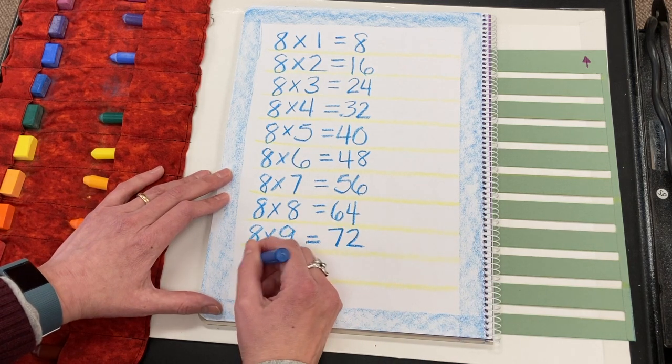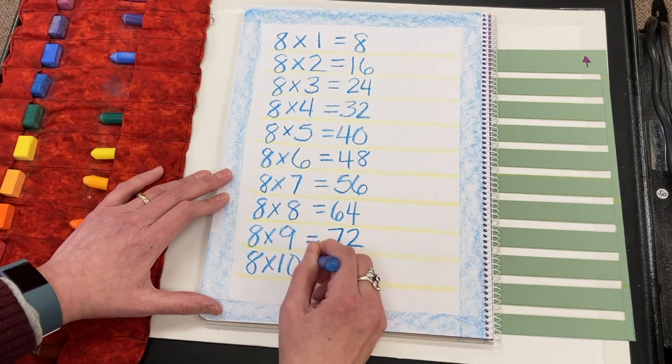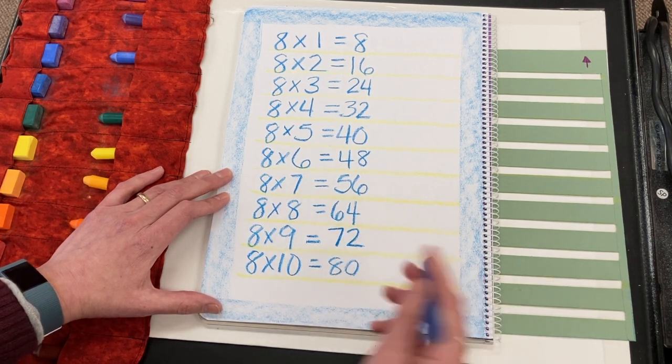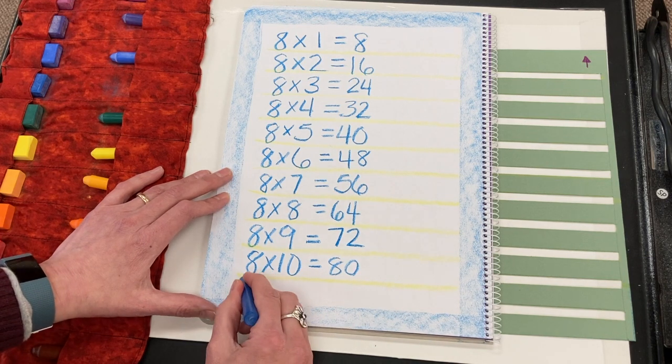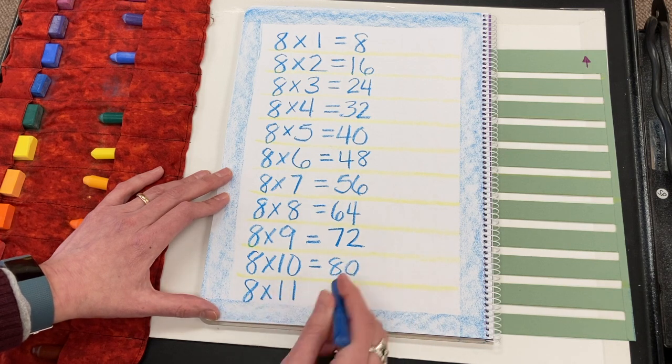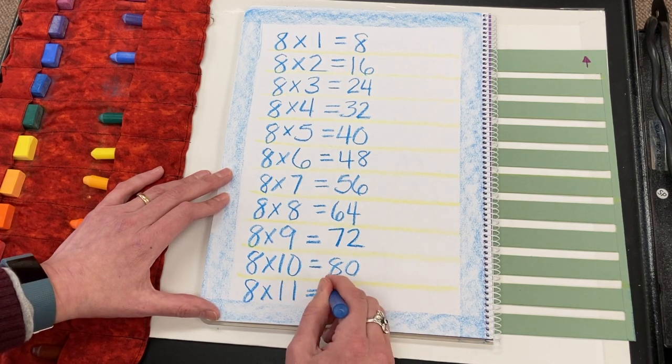And then we have 8×10. Eight tens is 80. And then 8×11 will always just be one more eight than that. So 88.